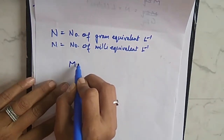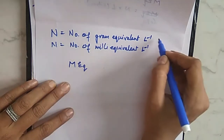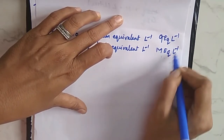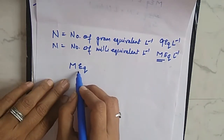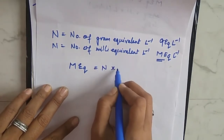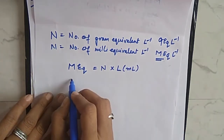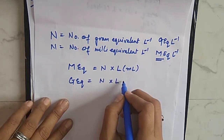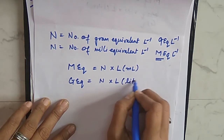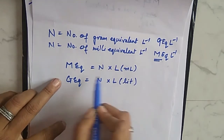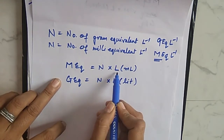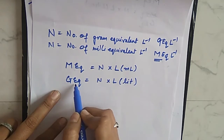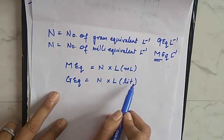From this equation we can get the expression for milliequivalents and gram equivalents. Milliequivalents will be equal to normality multiplied by volume taken in milliliters. If we want to calculate gram equivalents, that will be equal to normality multiplied by volume of the solution in liters. So if we have the normality and the volume of the solution, we can get the milliequivalents, or multiply normality by volume in liters to get gram equivalents.